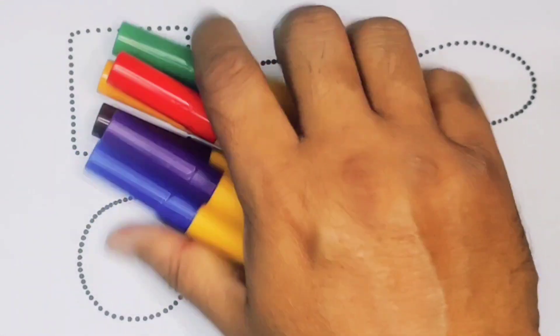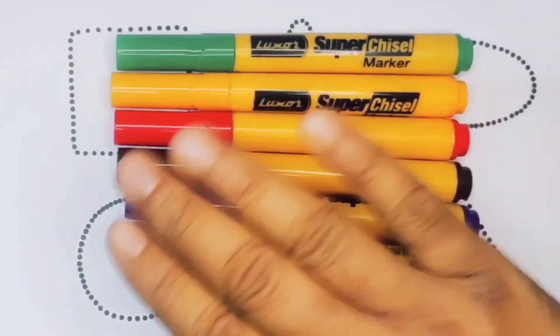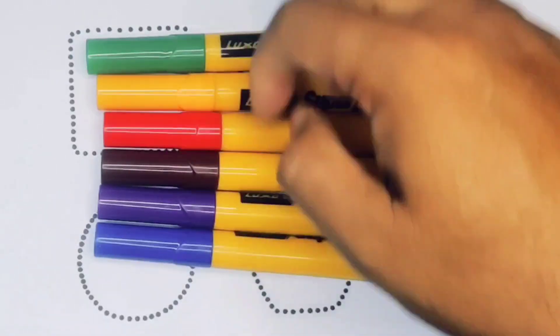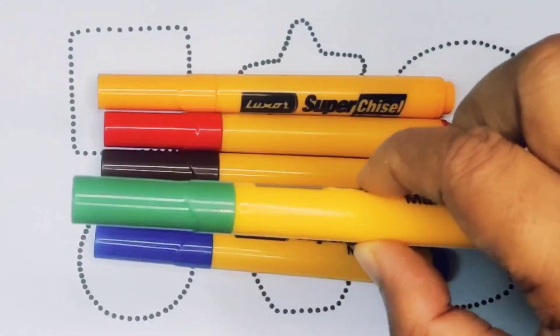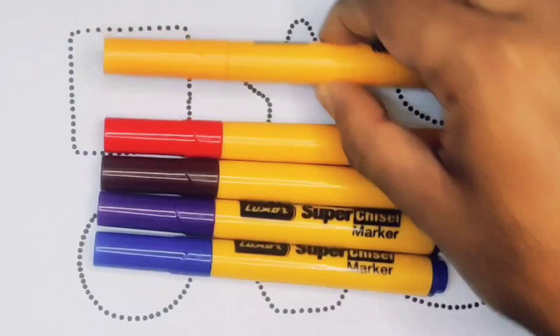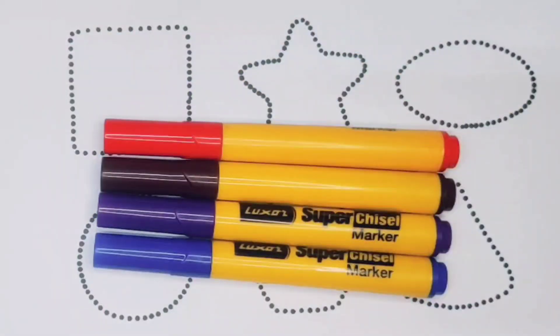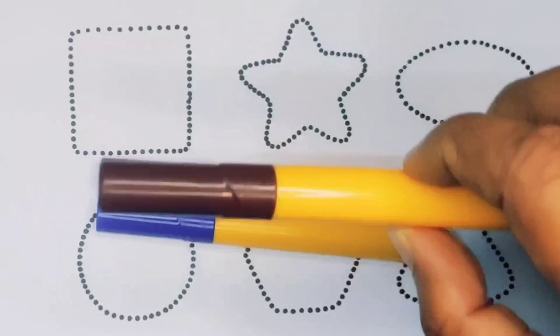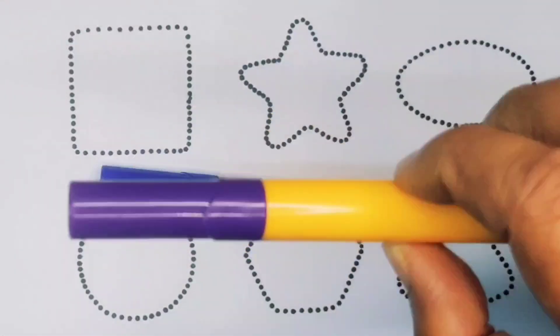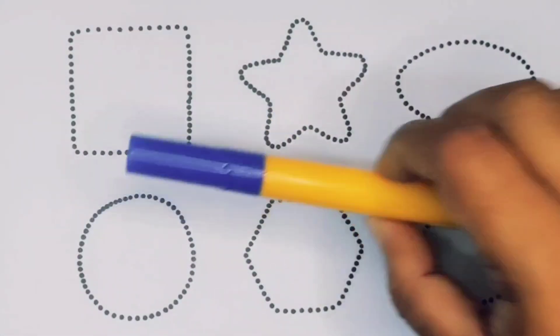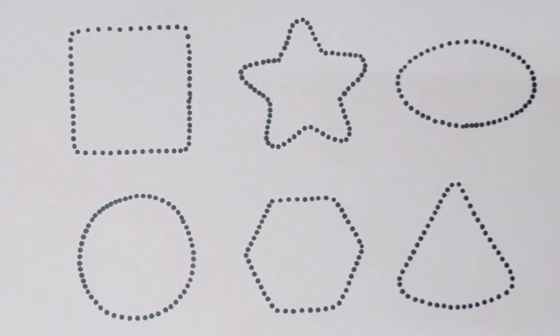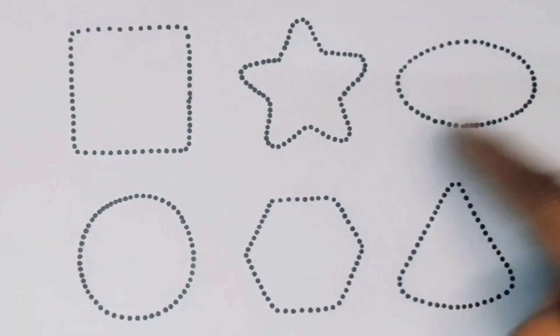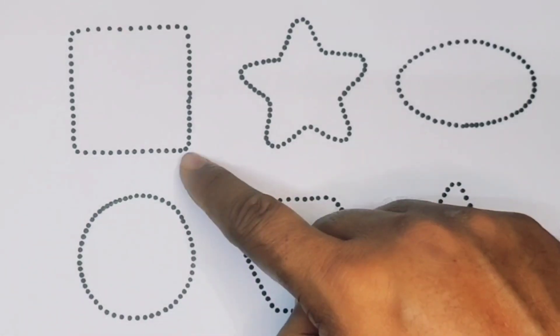Hello kids, welcome to my new video. First we're going to know the colors name: green color, orange color, red color, chocolate color, purple color, blue color, black color.